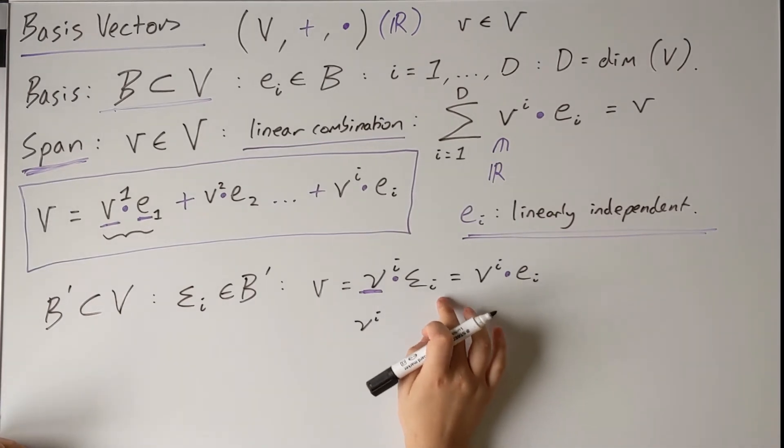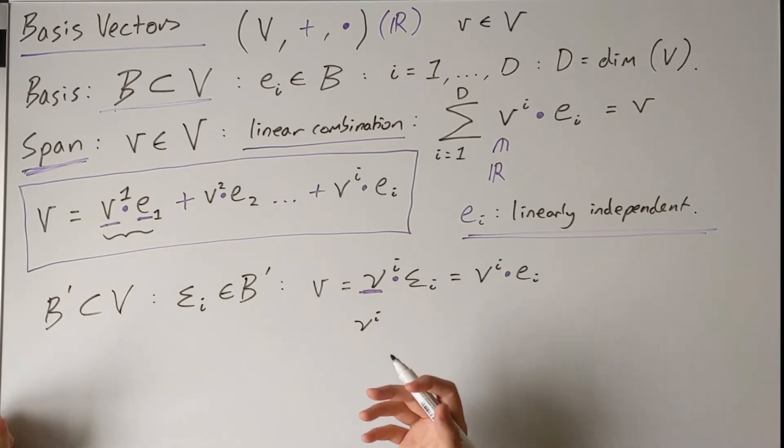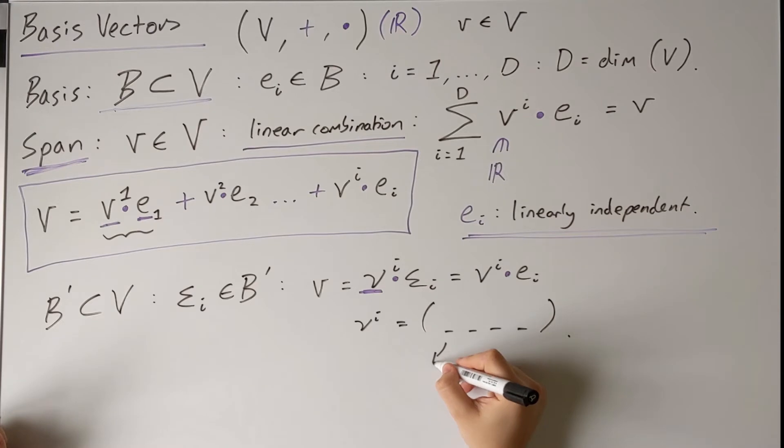Usually, the basis is clear or implied. So when somebody talks about a vector, they'll just hand you a list of components. Each component is implicitly tied to one of the basis vectors, say.